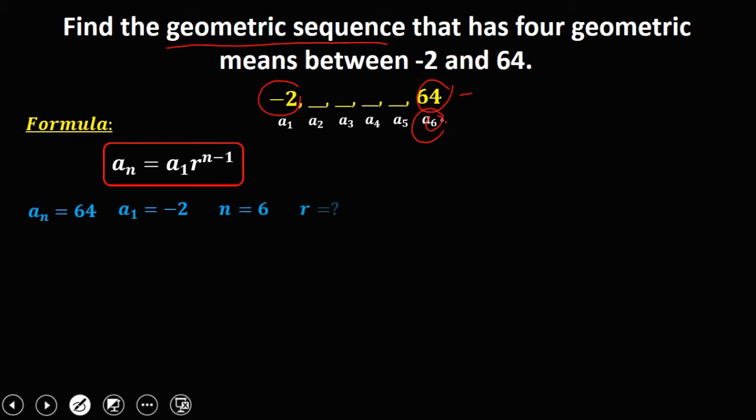Then for r, that's the common ratio, or the ratio between 2 consecutive terms. Since we don't have 2 consecutive terms, r is unknown.